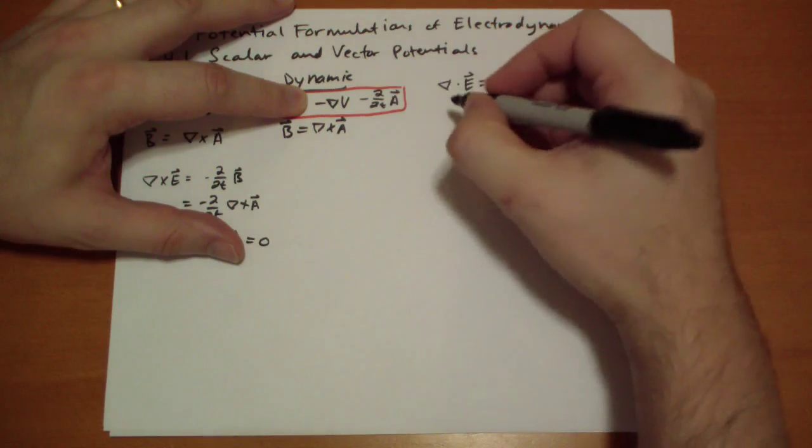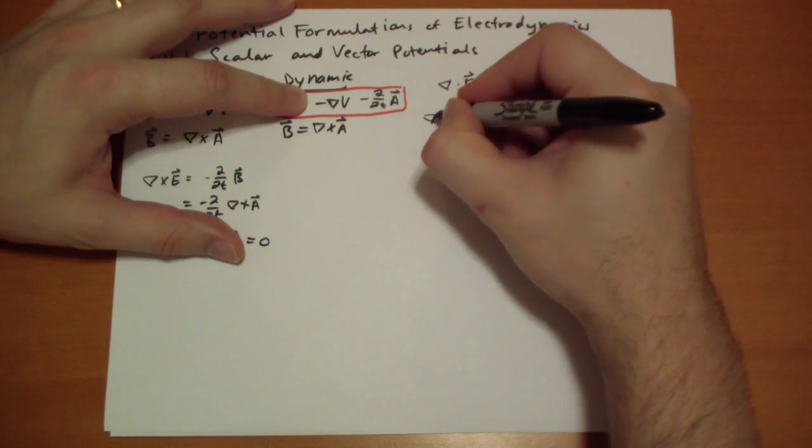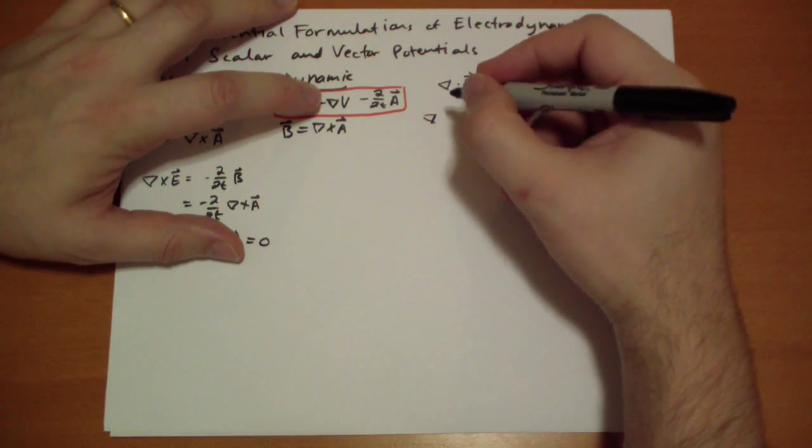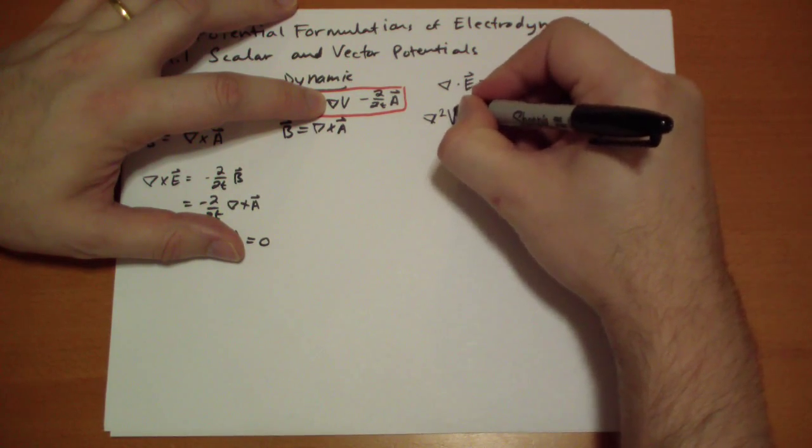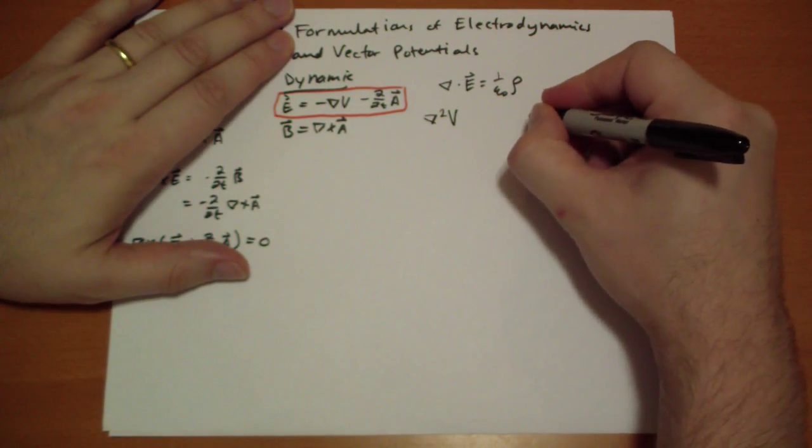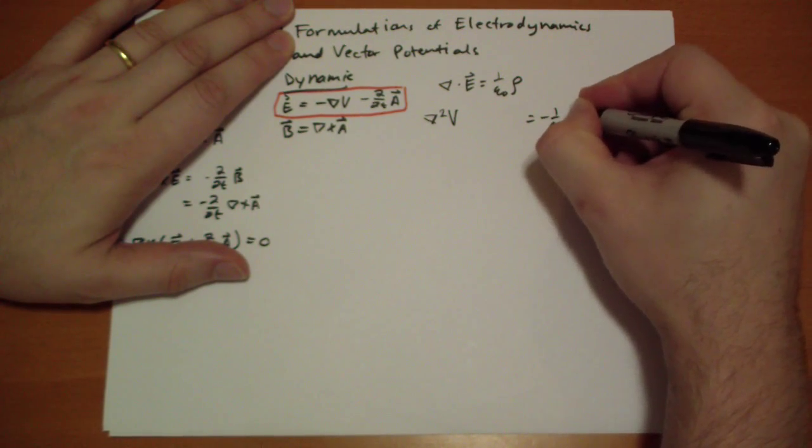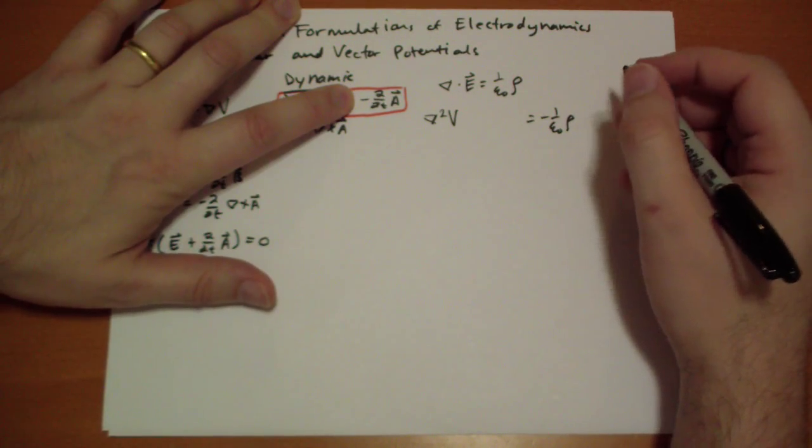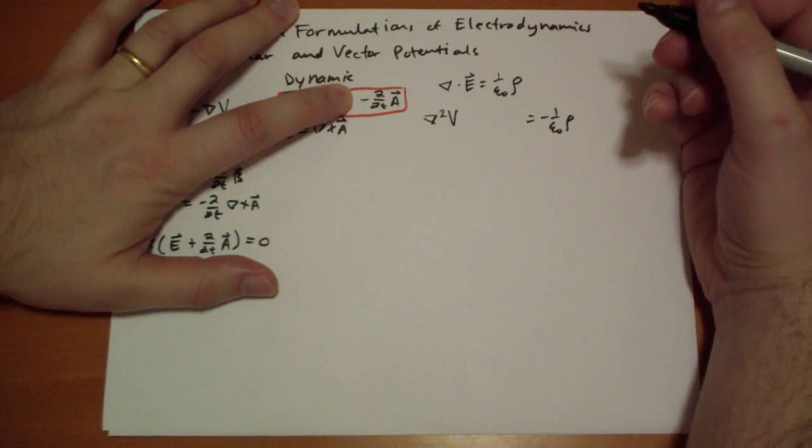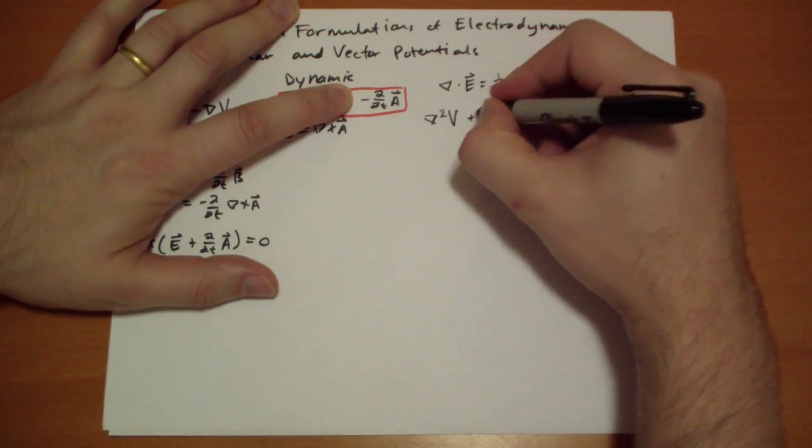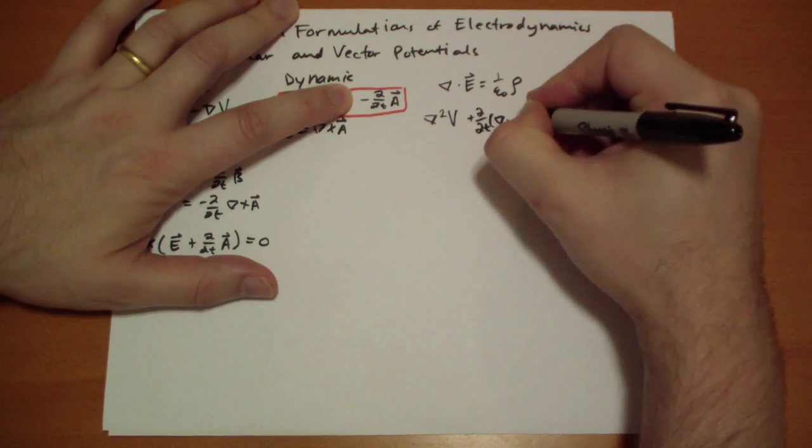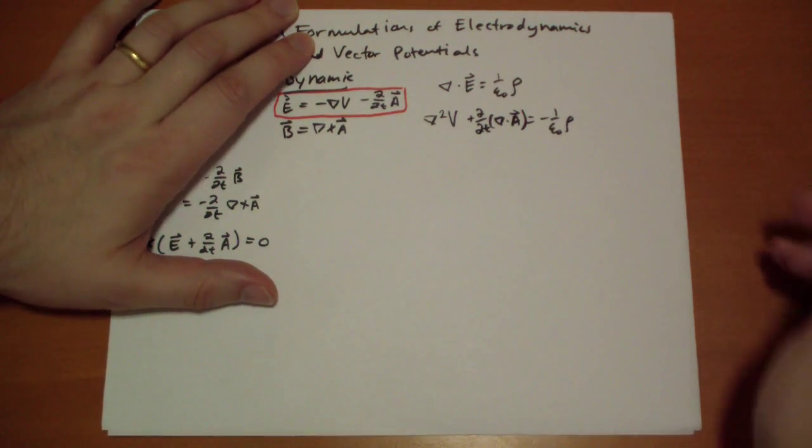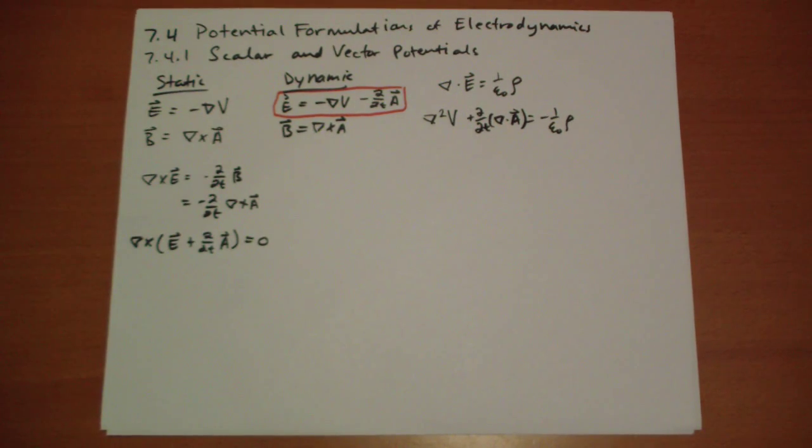When we plug in for E, these terms, we get the divergence of the gradient, so the Laplacian of V. I'm going to switch signs here, so this is going to be equal to negative 1 over epsilon-naught rho. And then we take the divergence of this, so he writes it as plus the time derivative of the divergence of A vector. Is equal to minus 1 over epsilon-naught rho.